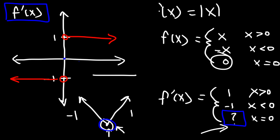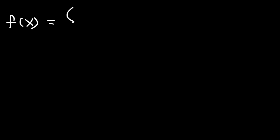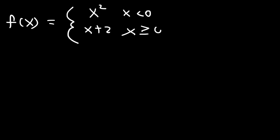Differentiability describes the continuity of the first derivative function. Now let's look at some practice problems. Consider the piecewise function f of x, which equals x squared when x is less than 0, and x plus 2 when x is greater than or equal to 0. Is the function continuous at x equals 0, and is it differentiable at x equals 0?